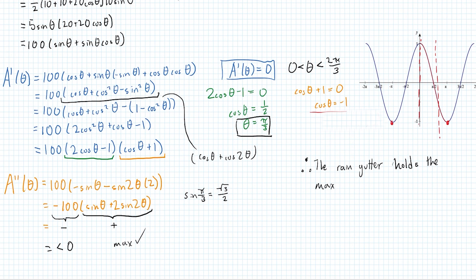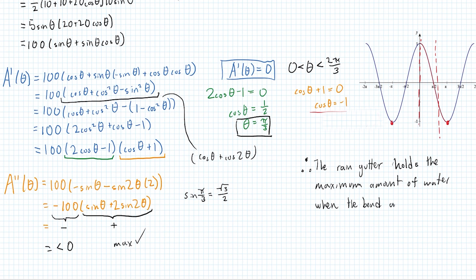Therefore we can conclude that the rain gutter holds the maximum amount of water when the bend angle is theta equals pi over 3, or 60 degrees.